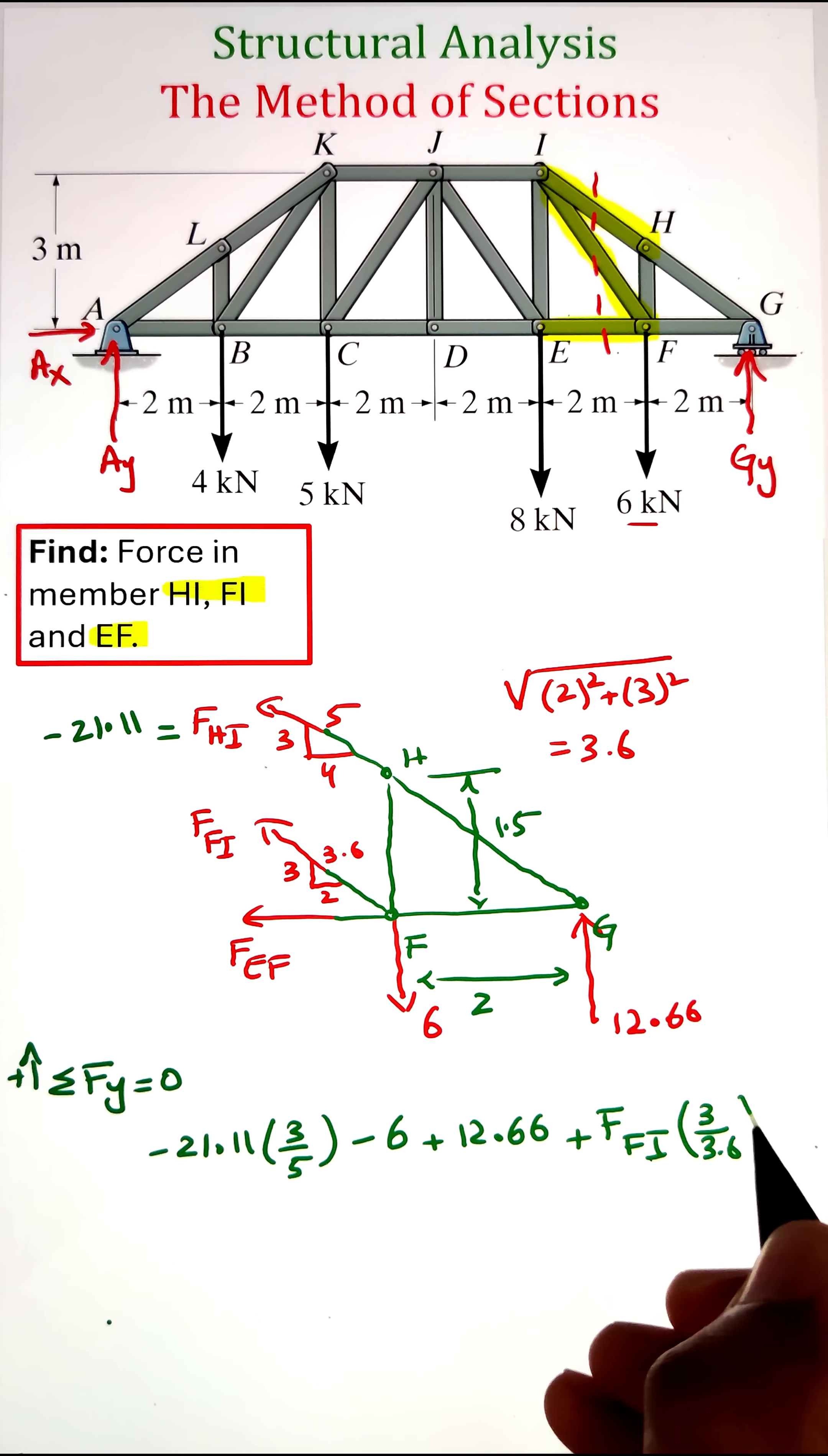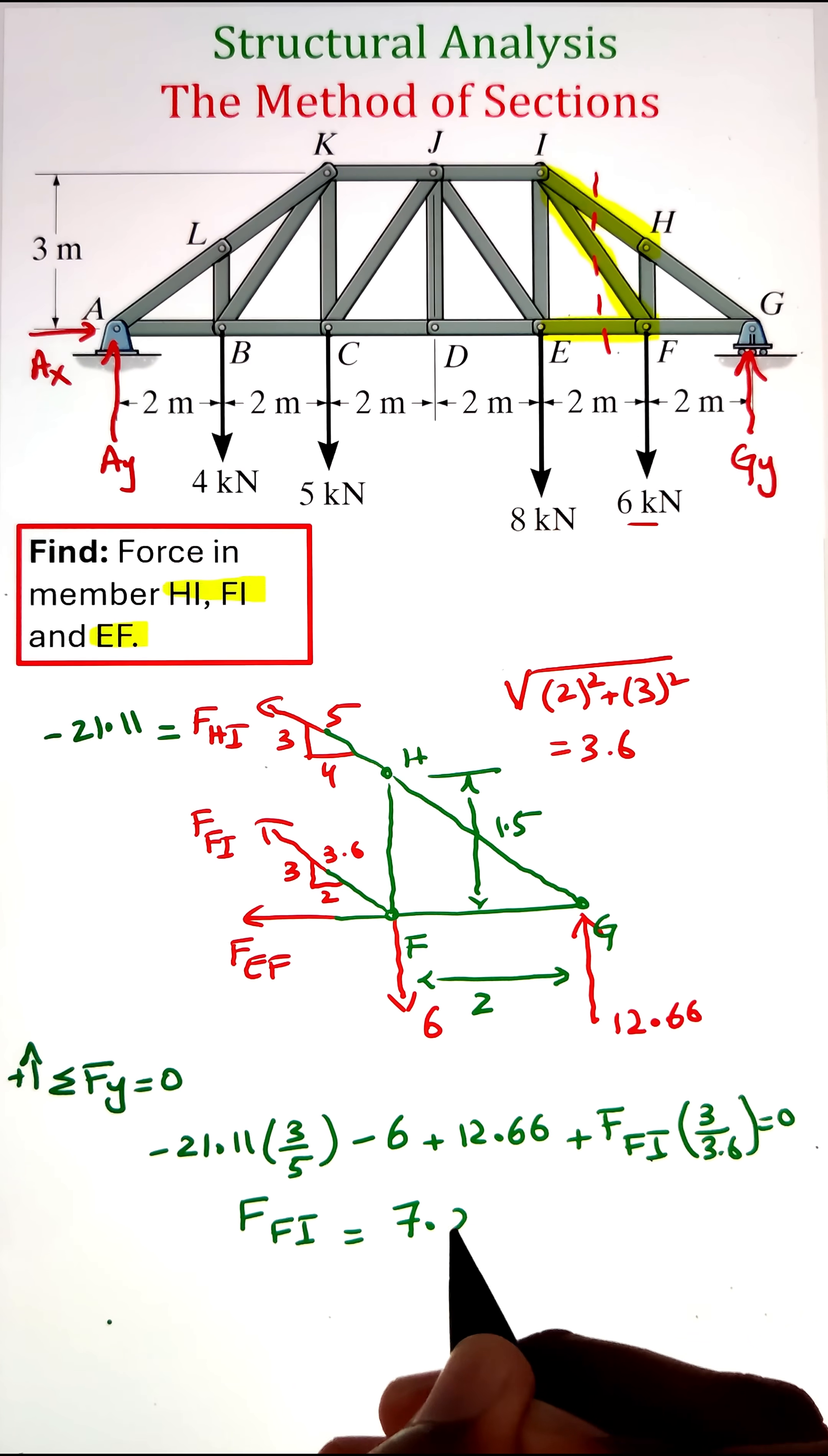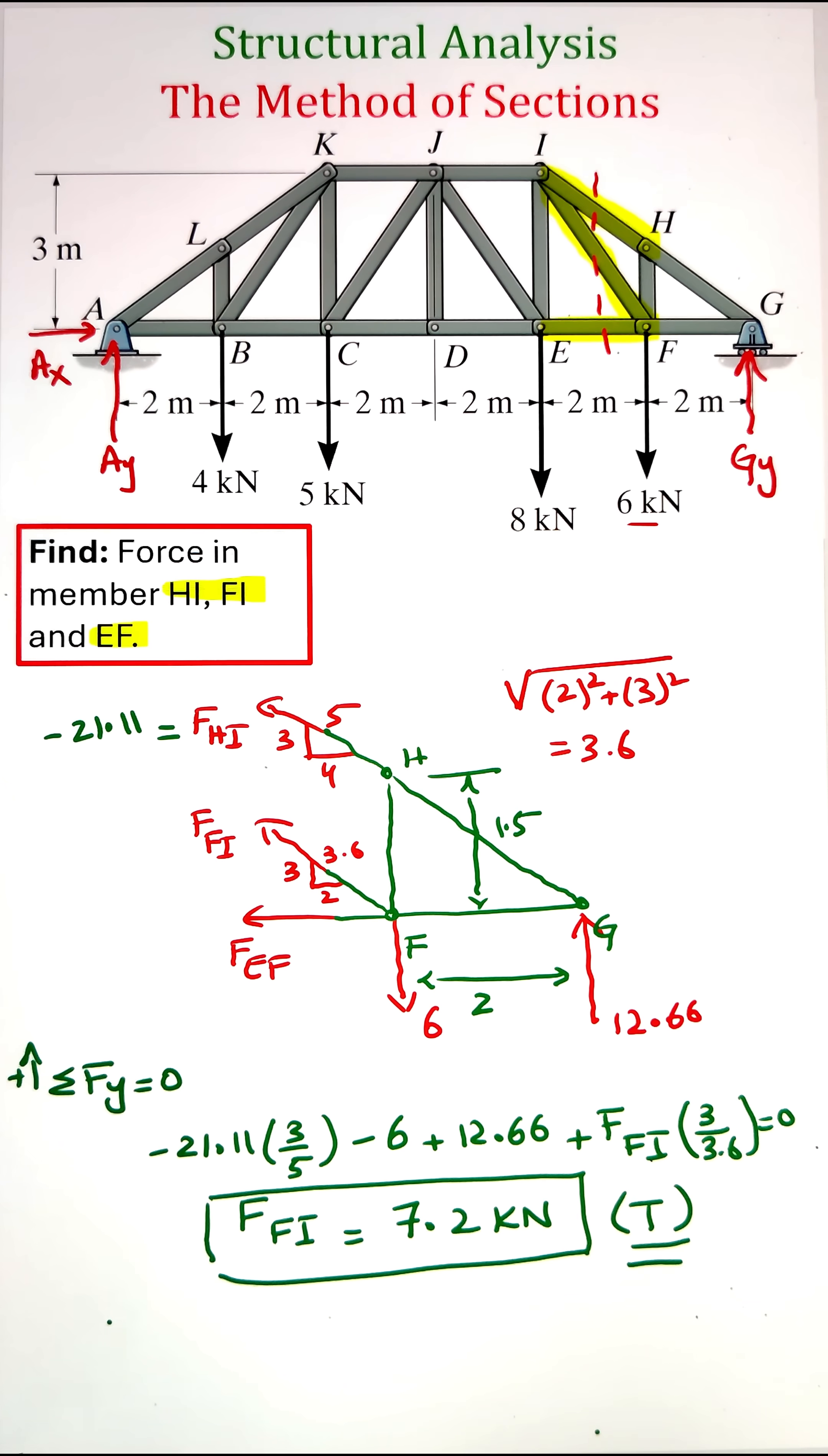Finally, we have a vertical component of force FFI calculated by multiplying the magnitude by 3/3.6. Simplifying, we get the force in member FI as 7.2 kilonewtons.